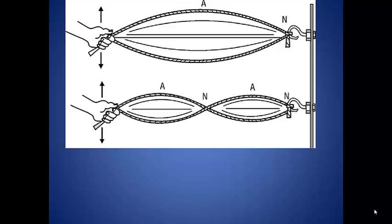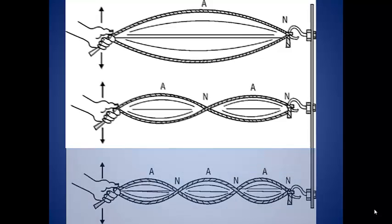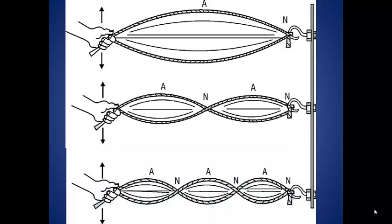You now have two nodes and two antinodes. Move your hand faster and you can make a standing wave with three antinodes. Can you guess how much faster your frequency is? Yeah, it's three times as fast as the original. Keep increasing the frequency and you can get as many antinodes in your standing wave as you want.